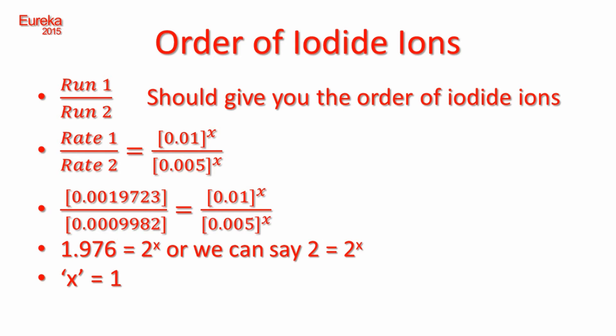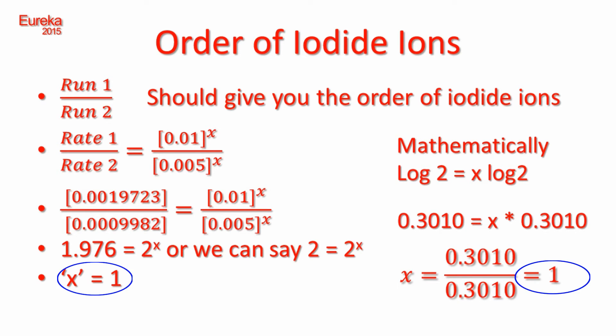The ratio of the concentrations of the iodide ions from trials 1 and 2 is equal to 2 to the power of x. Solving for x using logarithms, we determine the value to be equal to 1, or the order of the reaction with respect to iodide ions is equal to 1.